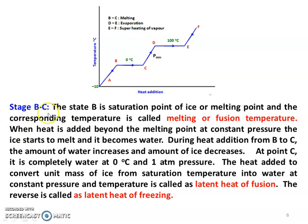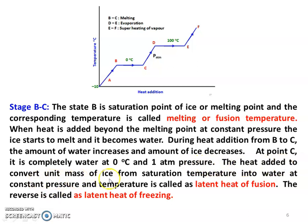Stage B to C: state B is the saturation point of ice, also called the melting point or fusion temperature. At atmospheric pressure, this temperature is 0 degrees Celsius. When heat is added beyond the melting point at constant pressure, the ice starts to melt and becomes water. During B to C, the amount of water increases and the amount of ice decreases. At point C, it is completely water at 0 degrees Celsius and 1 atmospheric pressure.